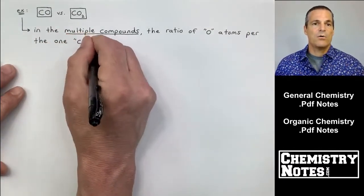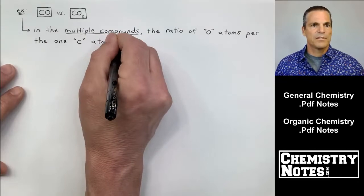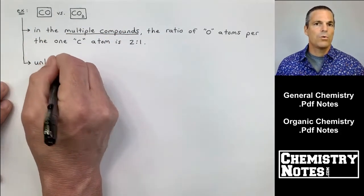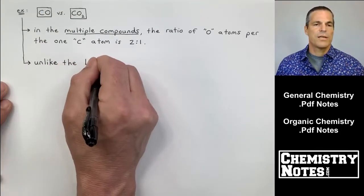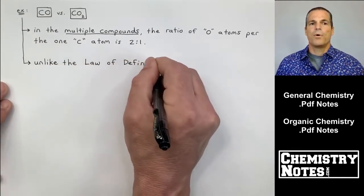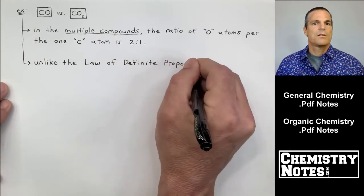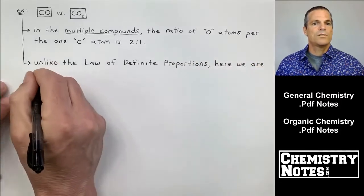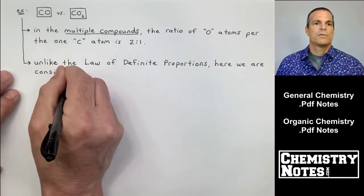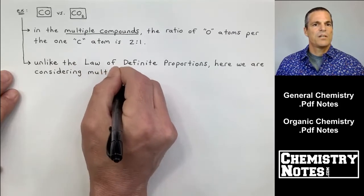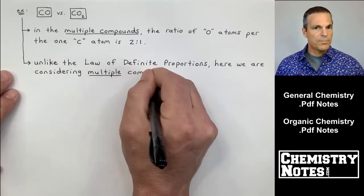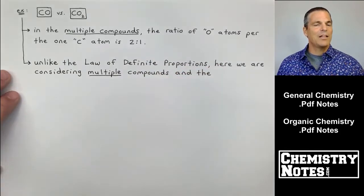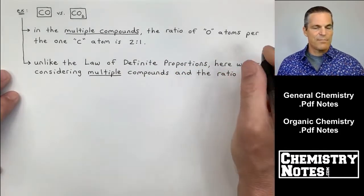So it's two oxygens on the right for every one oxygen on the left per that one carbon. So I can have CO or CO2, but you would never be able to see CO and CO 1.5. Has to be a whole number integer. Whole number ratio. So first bullet point in the multiple compounds, the ratio of oxygen atoms per the one carbon is two O's to one O.